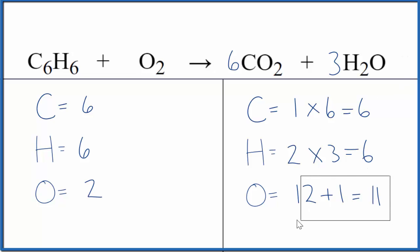Now again, we need to update these oxygens. So we have the six times two, that's the twelve, plus the three times the one. So we have fifteen, which is kind of a problem.